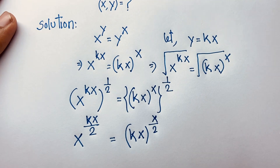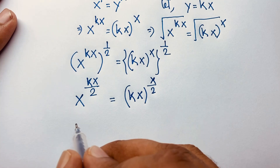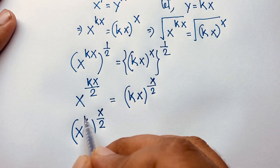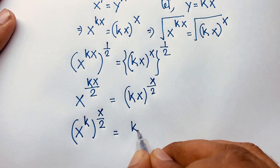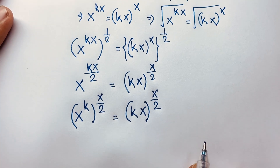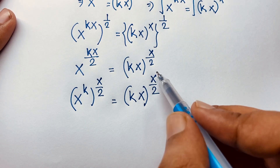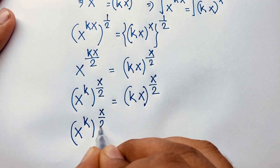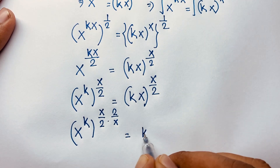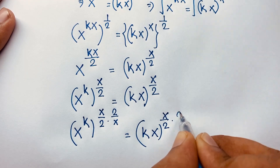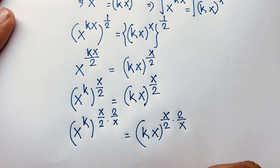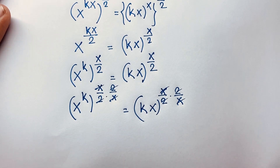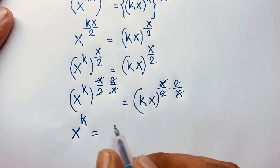Now I move k inside the bracket: x to the power k, whole to the power x over 2. Here both sides have the exponent x over 2, so I can cancel it out by raising both sides to 2 over x. After cancellation, we find x to the power k is equal to kx.